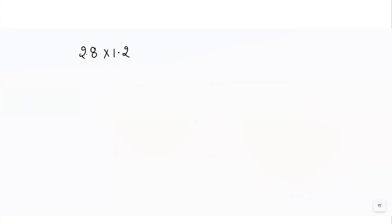0.8 multiplied by 1.2. When we multiply decimal numbers, we will first multiply the numbers without decimals. That means I will multiply 28 with 12, and once you multiply it you will get the answer as 336.